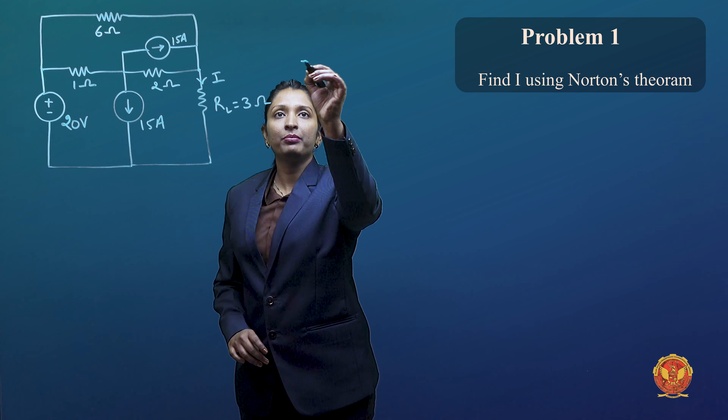The voltage source we open circuit. The resistances are 6 ohms, 1 ohm, and 2 ohms — and 3 ohms is the load resistance which we have already removed. RTH is equal to 6 ohms in parallel with (1 plus 2) ohms, which equals 2 ohms.